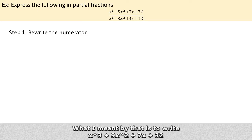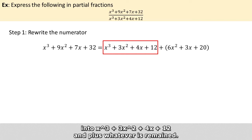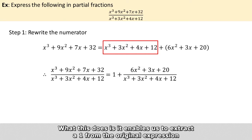What I meant by that is to write x³ + 9x² + 7x + 32 into x³ + 3 times x² + 4x + 12 and then plus whatever remained. What this does is it enables us to extract a 1 out of the original expression.